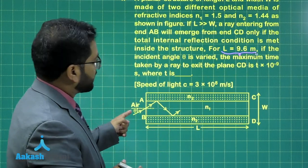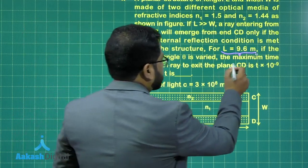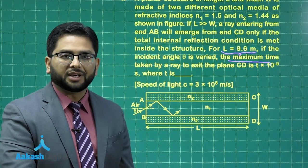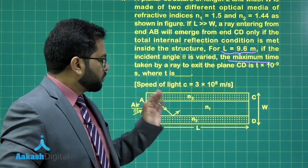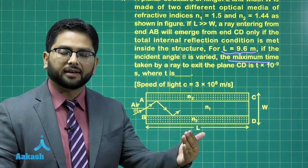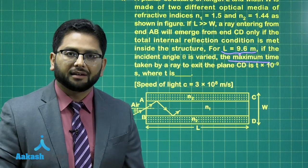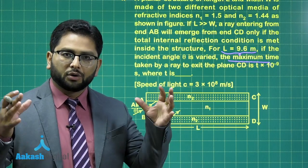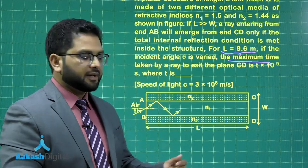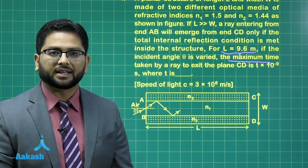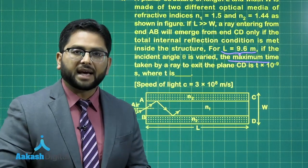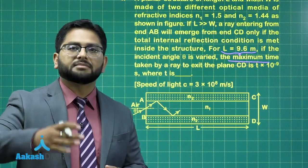It says, if the incident angle theta is varied, look at the word, the maximum time taken by a ray to exit the plane. Now you need to understand that we want the light ray to have total internal reflection. And we also want the time taken by the light ray should be maximum. So both these conditions have to be satisfied. For light to have TIR, the angle has to be greater than critical. So number one, the angle of incidence here inside. And number two, for maximum time, there must be maximum number of reflection.